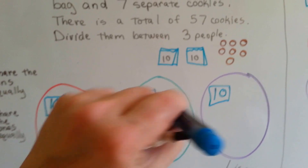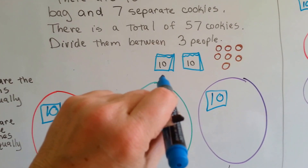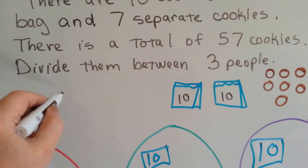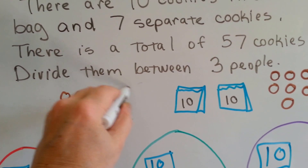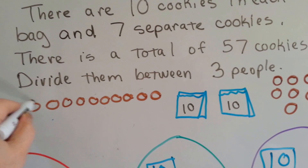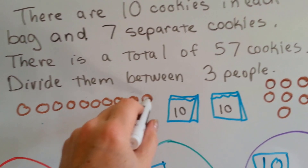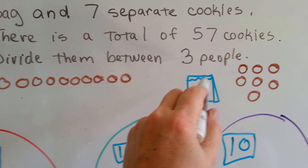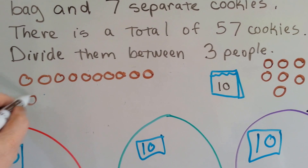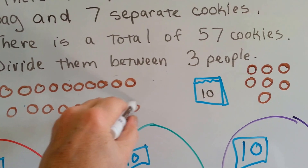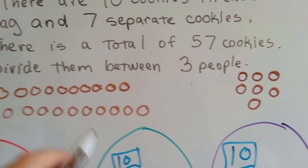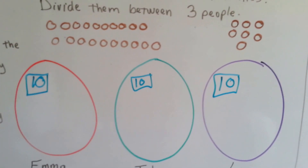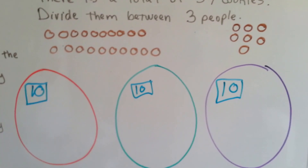So what we're going to have to do is break up these two remaining bags of ten into separate cookies. This bag of ten becomes ten separate cookies — one through ten. And we need to open this other bag of ten as well — one through ten. So now we've got all these separate cookies that we can split between them. That's the regrouping part — we're turning tens into ones and regrouping them.